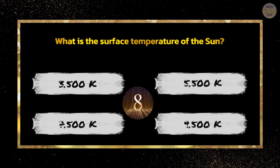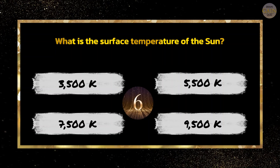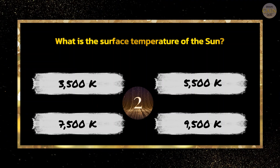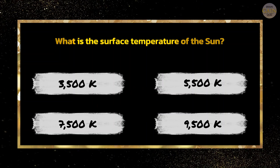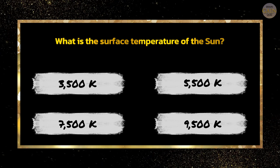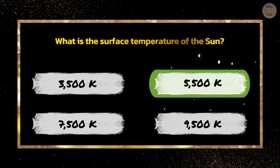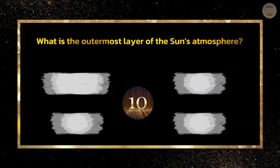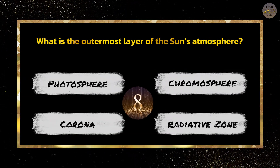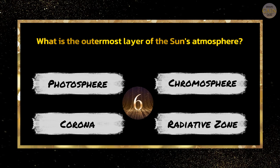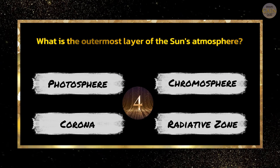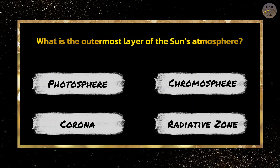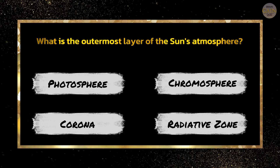What is the surface temperature of the Sun? 5500K. What is the outermost layer of the Sun's atmosphere? Corona.